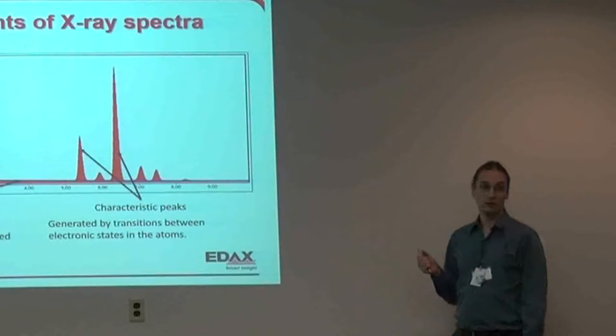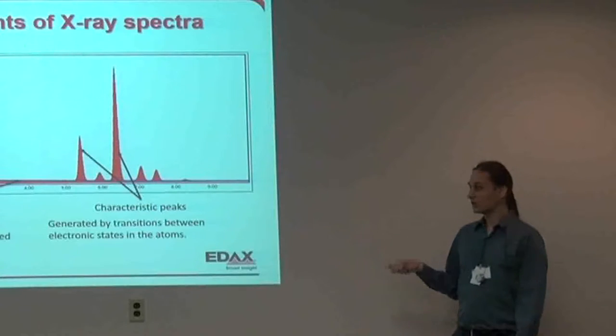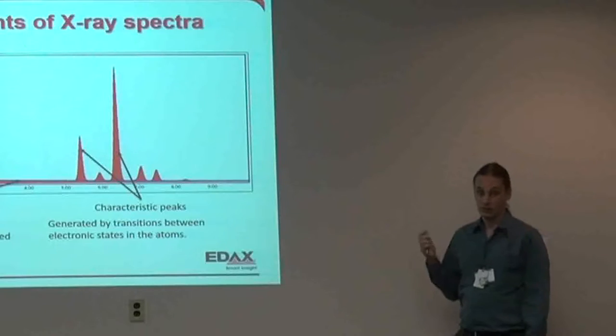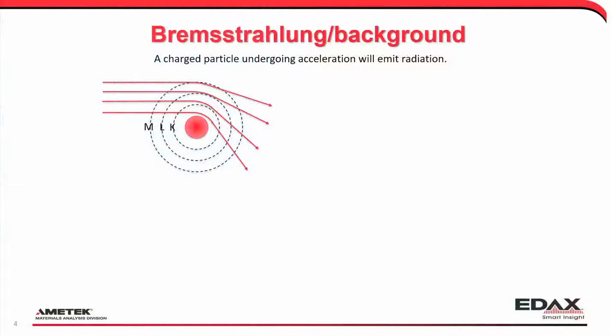Filtering it out is fast. If you include the background, you have to model it, which can be tricky. But we choose to model the background and include it in the spectrum. Bremsstrahlung is generated whenever you have a charged particle undergoing acceleration or deceleration — it will emit radiation. This is what is used in synchrotron facilities.